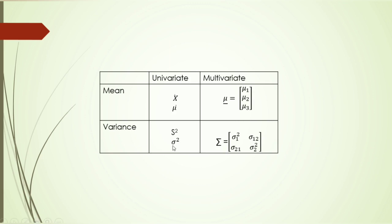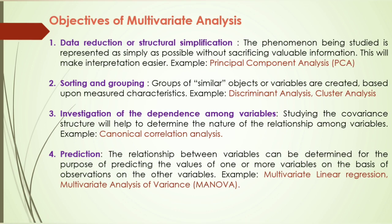For variance: in univariate analysis we use s-squared for sample variance and sigma-squared for population variance. In multivariate analysis, this extends to a variance-covariance matrix, represented by sigma. For two variables, sigma-1-squared is the variance of the first variable, and sigma-1-2 is the covariance between variable one and variable two. This is the variance-covariance matrix in multivariate analysis.